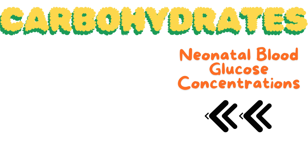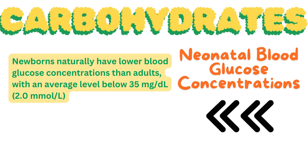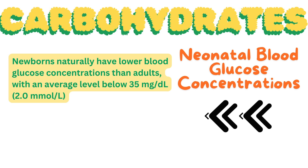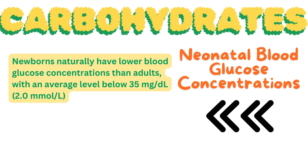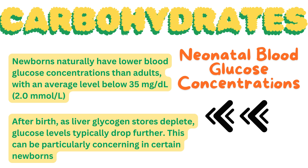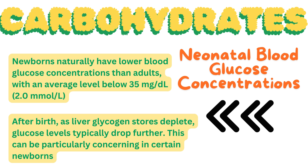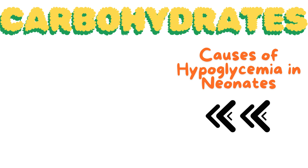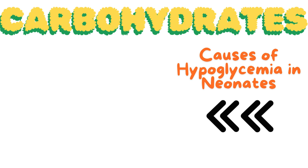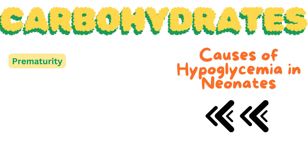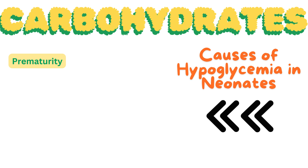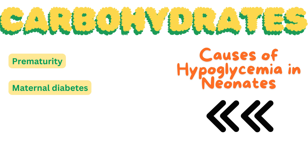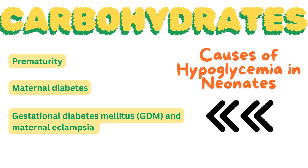Newborns naturally have lower blood glucose concentrations than adults, with an average level below 35 mg per deciliter (2.0 mmol/L). After birth, as liver glycogen stores deplete, glucose levels typically drop further. Hypoglycemia in newborns is more common in premature infants due to immature metabolic processes, and in infants born to diabetic mothers. Gestational diabetes mellitus (GDM) and maternal eclampsia are also associated with neonatal hypoglycemia.